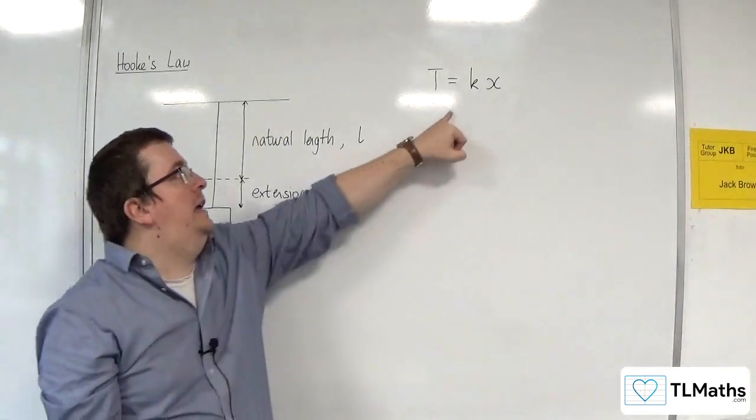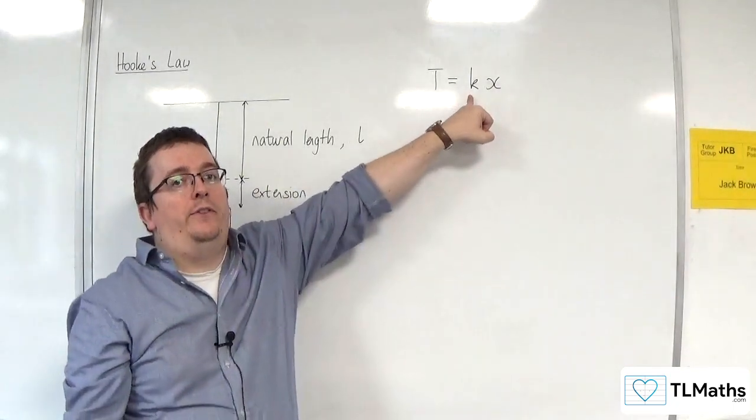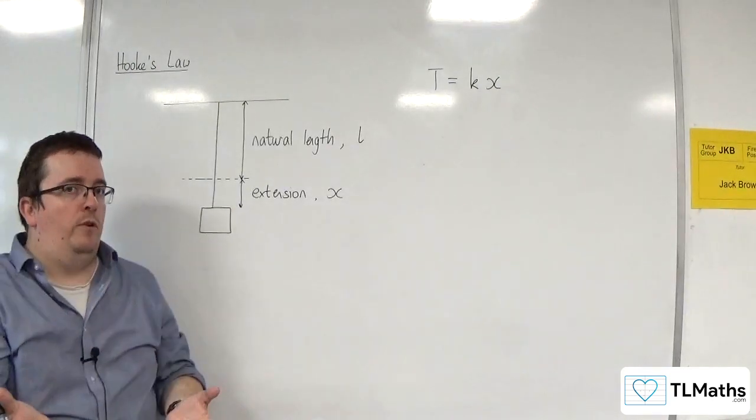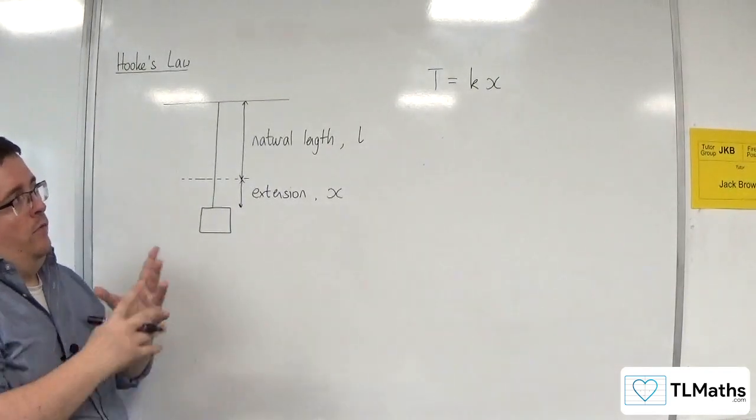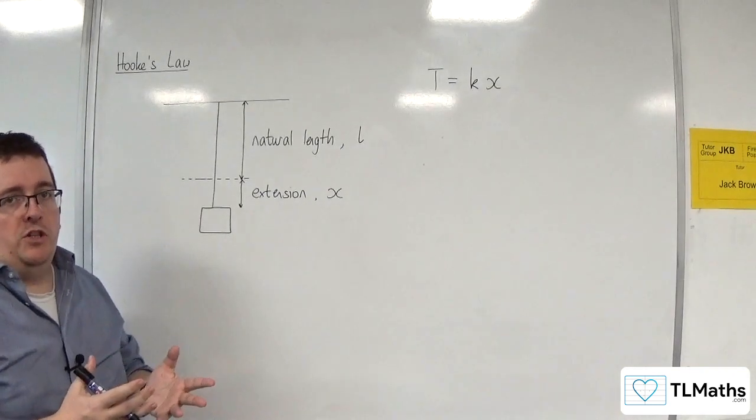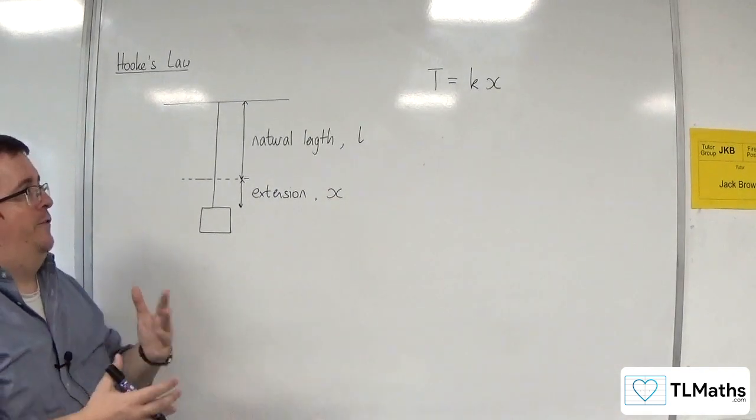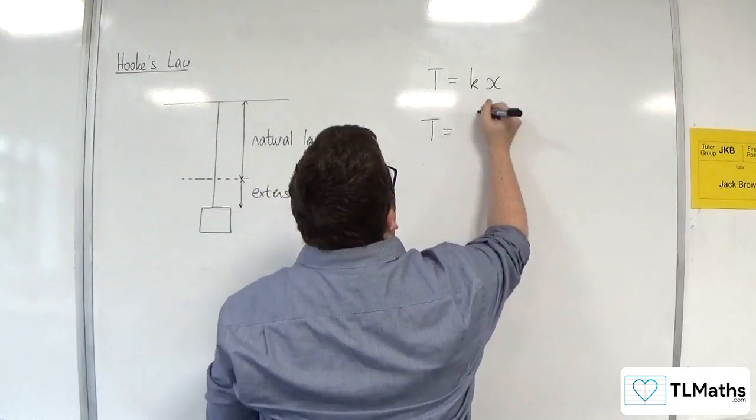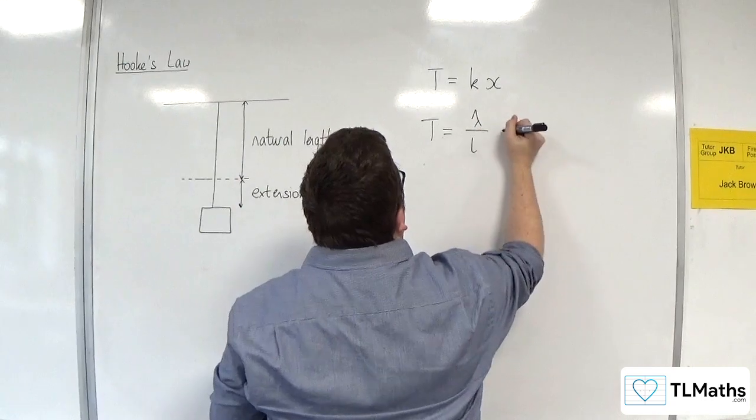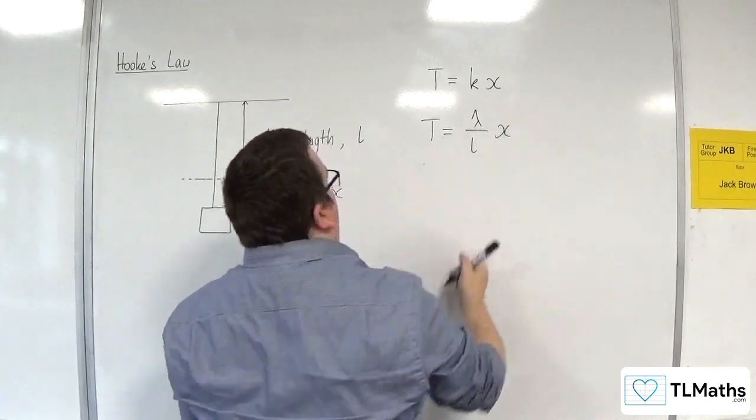Now, K here is referred to as the stiffness. So it depends on, obviously, the material that you're using here. Now, some problems will also go into taking this a little bit further, where K can be written as lambda over L. And there's your X.